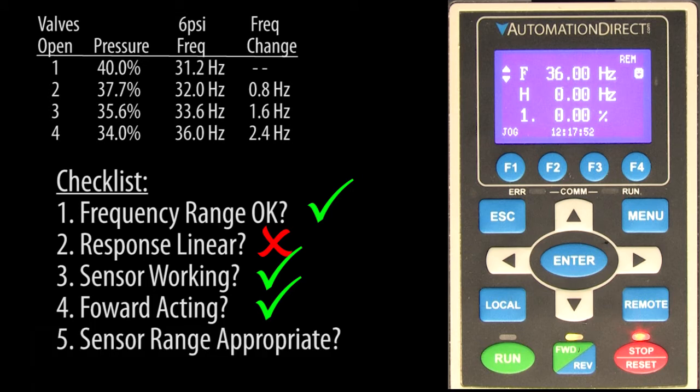We also know that the sensors are appropriately sized for the job. We are operating in the middle of the sensor's 15 PSI range. If we were using a 100 PSI sensor and we only needed around 6 PSI, then we would be using a very small portion of the sensor's range.